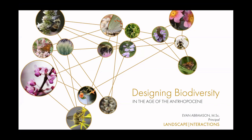Thanks, Rosemary. It's a pleasure to be here with you all tonight. I'm going to be talking about the work we do on landscape design and planning on a regional scale, and how we try to create biodiverse landscapes by focusing on the needs of at-risk pollinator species and the native plant communities that have co-evolved with them. The subject of tonight's talk is designing biodiversity in the age of the Anthropocene.